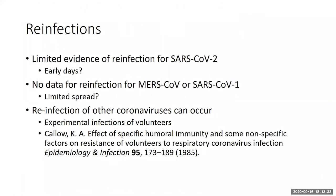There is limited evidence of reinfection for SARS-CoV-2. SARS-CoV-1 and MERS don't help us much — there's very little reinfection data, though they do show that antibodies stay available up to several years afterwards. The limited spread and short, localized outbreaks may explain why reinfections weren't observed. What does help us are the common human coronaviruses, where people have been working for decades. There are data from other human coronaviruses showing that reinfections do occur, including an experimental infection in volunteers where reinfections were successfully initiated.